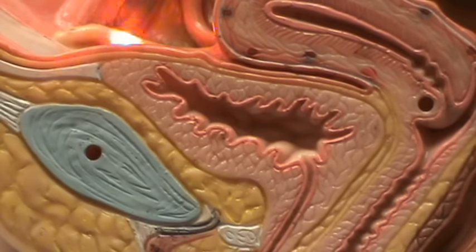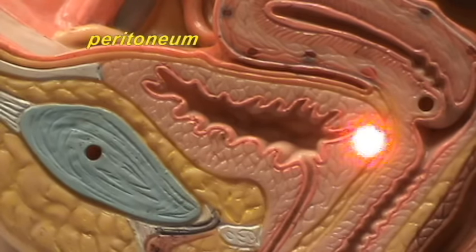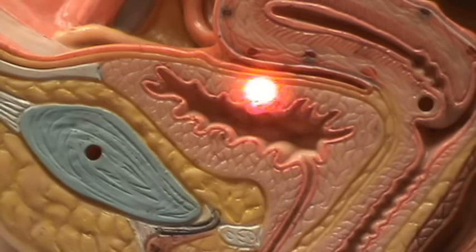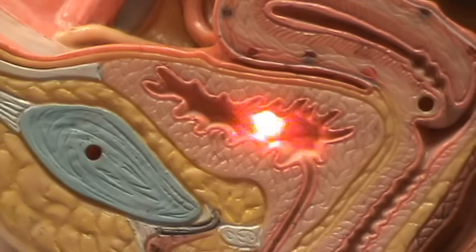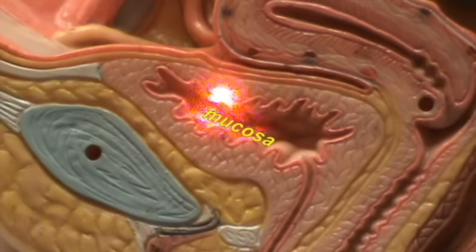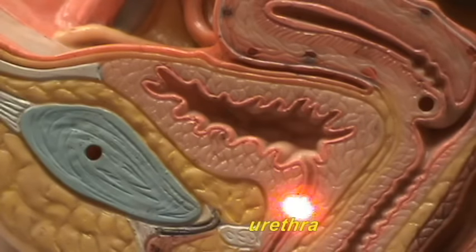Right over here we have the peritoneum. Here is the muscular wall of the urinary bladder, the detrusor muscle. You can see the mucosa represented here by the squiggly line. This opening becomes the urethra, which is going to open up at the vestibule of the vulva.